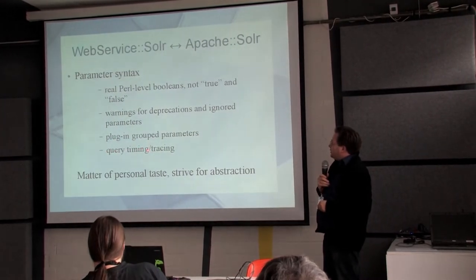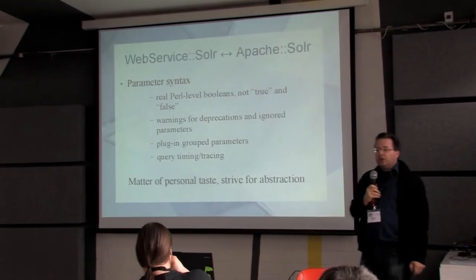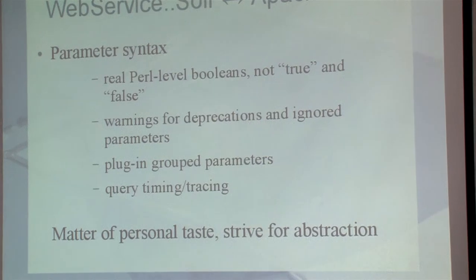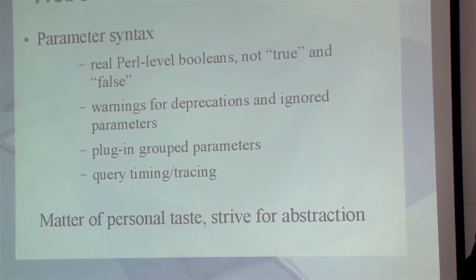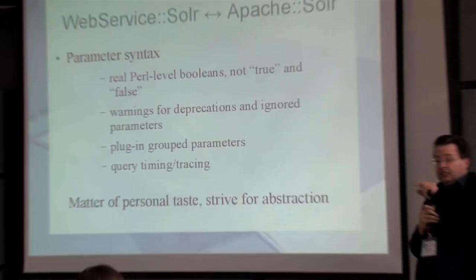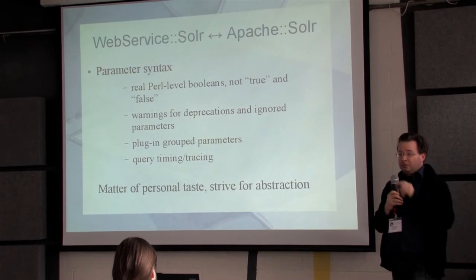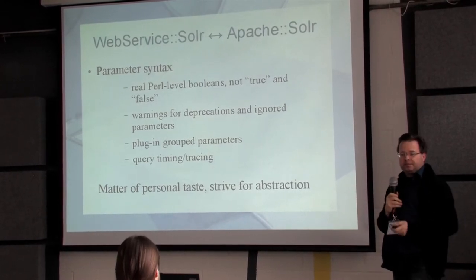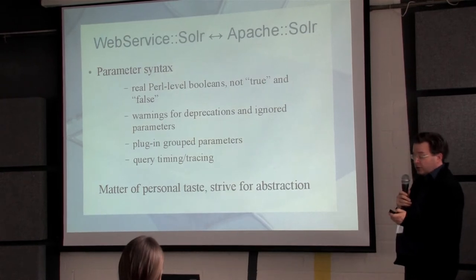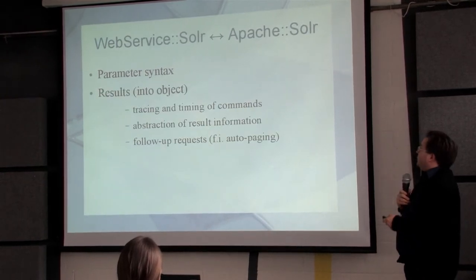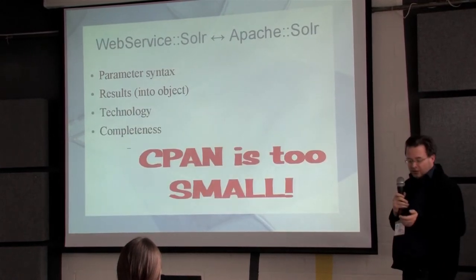One of the things I always need is timing and tracing. You send out queries and you want to know how long they take, which search was queried, and so on. There should be some tracing information in the library you take from CPAN, not in your own program, but preferably in the library which really knows what it's doing. So actually there are so many reasons not to use a CPAN module as-is: parameter syntax, results, technology, completeness — CPAN modules are too small, far too small.